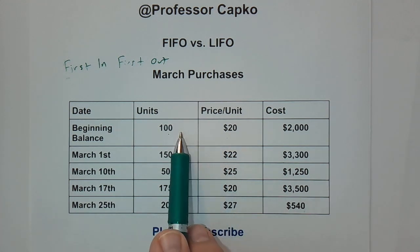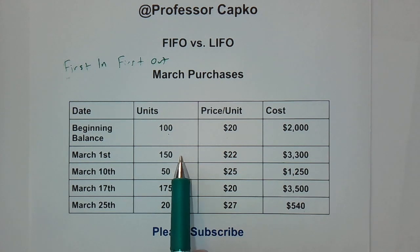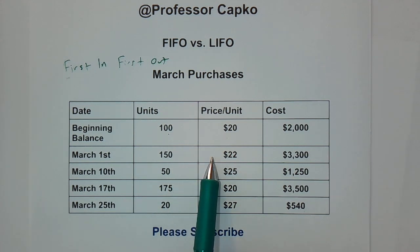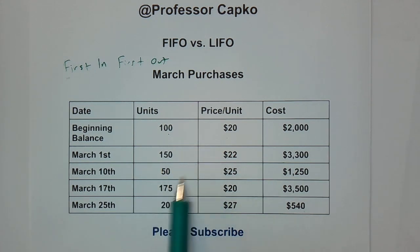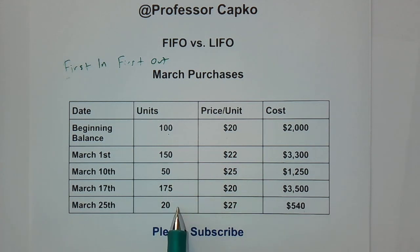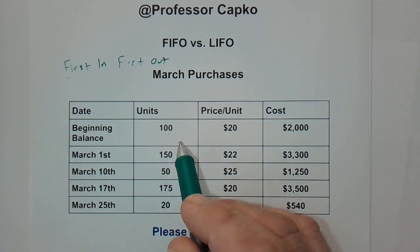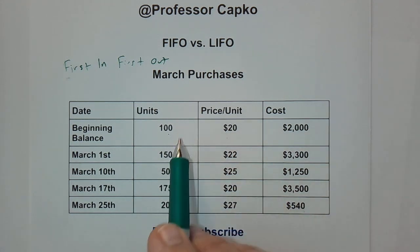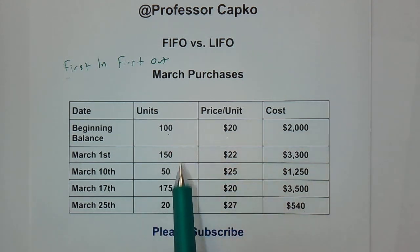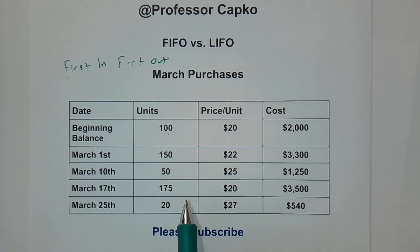There would be no more at the $20 price and only 100 remaining at the $22 per unit price. We keep working our way down until all unit inventory is either exhausted or left in our ending balance. So first in, first out — we start with the ones that came in first and sell the ones that came in last, last.